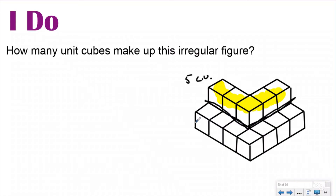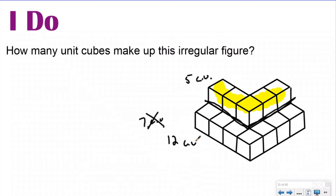The bottom layer is where it gets tricky. A lot of people just count the ones they see — one, two, three, four, five, six, seven — and say the bottom layer has a volume of seven cubic units. That's incorrect, because this is not Hogwarts. Nobody's doing magic here. The top layer can't levitate by itself; there has to be something underneath. So the bottom layer has the seven you can see, plus five cubes hidden underneath the top layer that you can't see. The total volume for the bottom layer is 12 cubic units. Adding the top layer: the total volume is 17 cubic units.